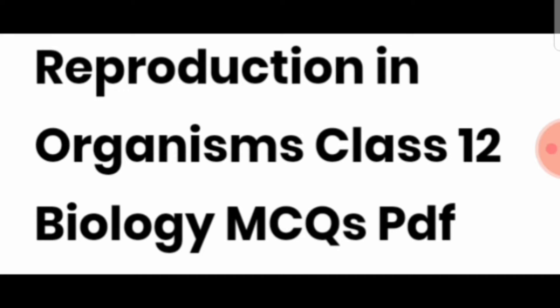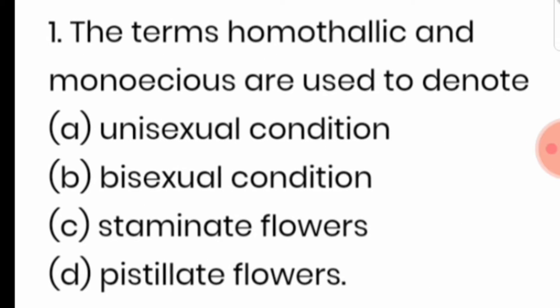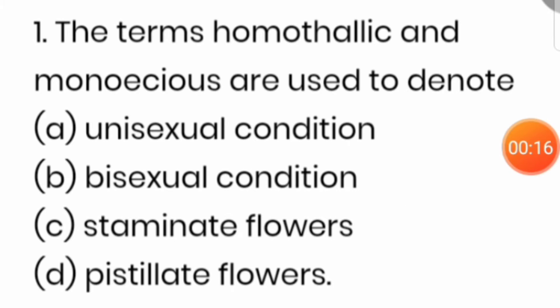Reproduction in Organisms, Class 12 CBSE Biology. In this video we are going to revise very important MCQs from this chapter. The first question: the terms homothalic and monoaceous are used to denote bisexual condition.